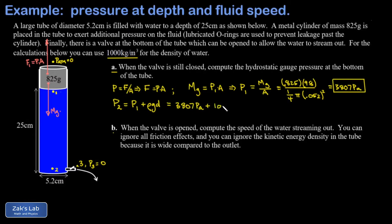We get 3807 pascals at the top plus 1000 kg/m³ for water times 9.8 m/s² times 0.25 meters depth. When we run the numbers we get 6257 pascals at point 2, which rounds to 6260 pascals with three sig figs.